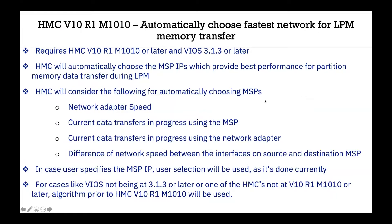Regarding the automatically choosing fastest network for LPM: the existing HMC options for migration still provide user overrides for specifying a specific VIOS and IP — that is not taken away. The new automatic selection only applies when you have not specified a specific MSP IP or MSP to use. In that case, the HMC will make a better selection to improve resource usage and make LPMs faster.